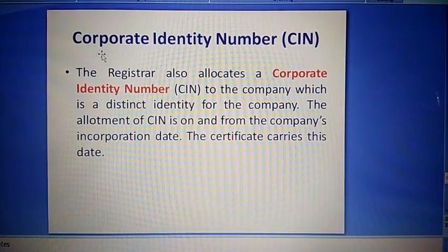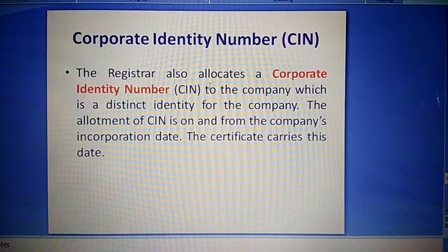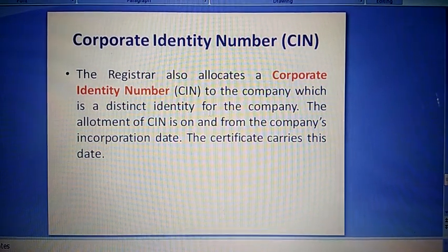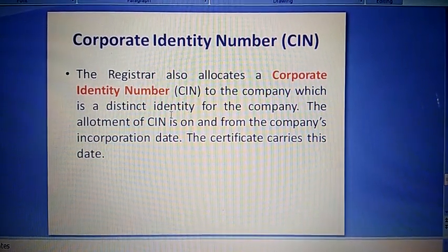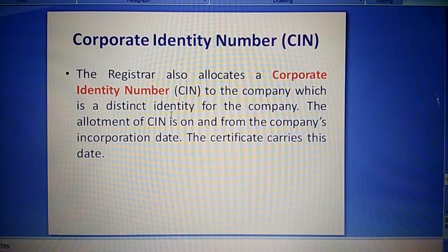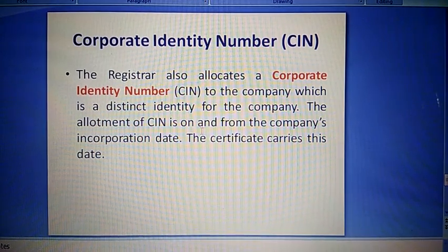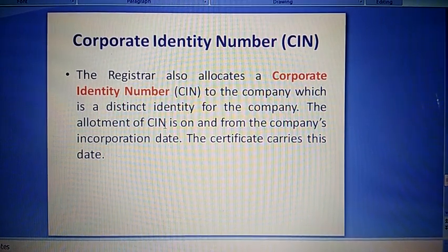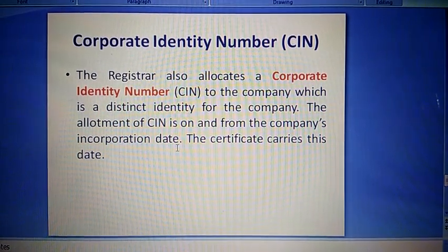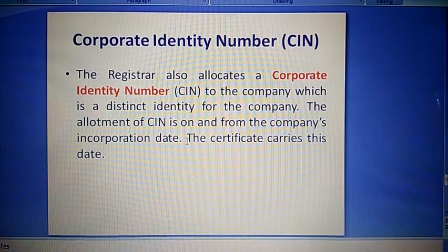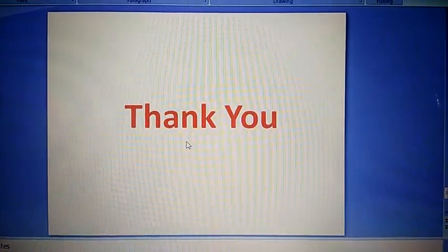Corporate Identity Number (CIN): the registrar also allocates a corporate identity number to the company, which is a distinct identity for the company. The allotment of CIN is on and from the company's incorporation date — CIN number jo milega, company ki incorporation ki date se hi milega. The certificate carries this date. Thank you.